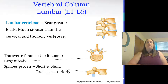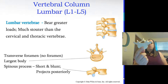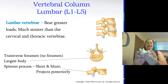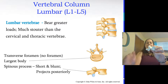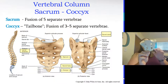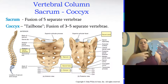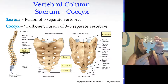The lumbar vertebrae bear the greatest loads, so they are the largest and stoutest. They have no transverse foramina, the largest bodies, and spinous processes that are blunt and project straight posteriorly for big muscle attachment. The sacrum is a fusion of five separate vertebrae with sacral foramina for nerve passage. The coccyx, or tailbone, is a fusion of three to five vertebrae.